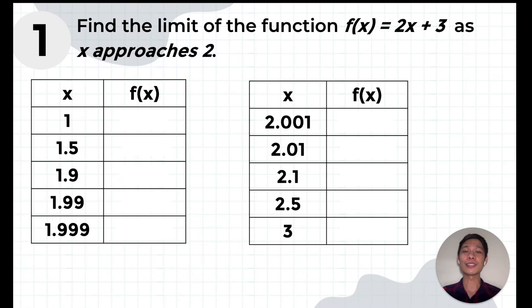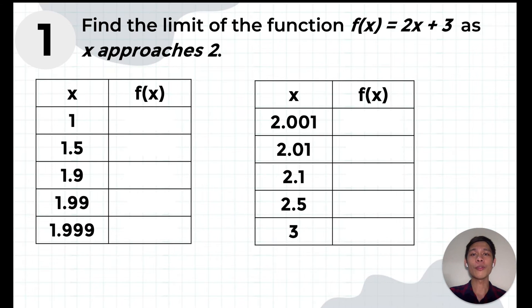For example number one, let's find the limit of the function 2X plus 3 as X approaches 2. Using a table of values, we assign values to the X column which are close to 2 from either side. Meaning, from the left side of 2 which is represented by the table on the left and from the right side of 2 which is represented by the table on the right. The table on the left shows numbers which are less than 2 but very close to 2. While the table on the right shows numbers which are greater than 2 but very close to 2.